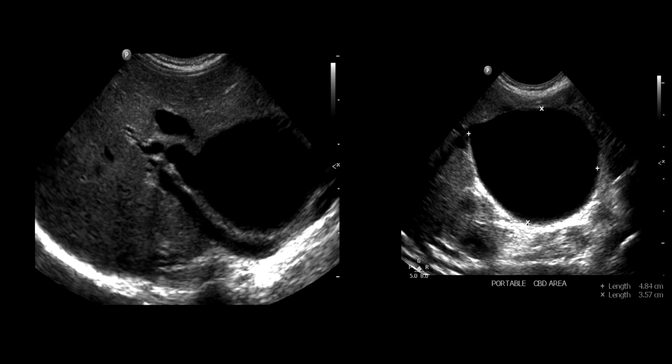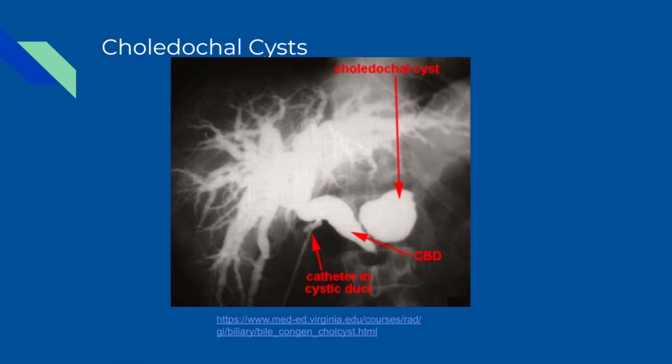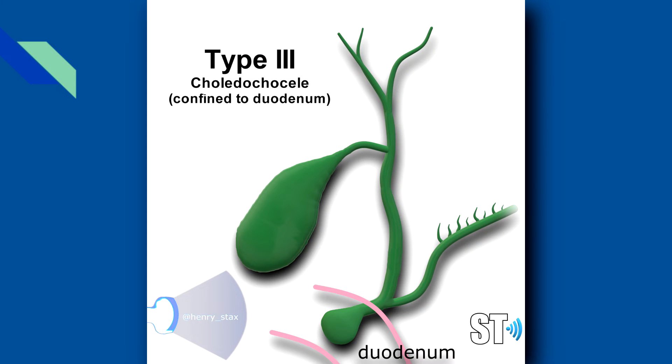Type 2 is a true diverticulum of the bile duct, and it is rare. Type 3 is a choledochocele, which is confined to the intraduodenal portion of the common bile duct.